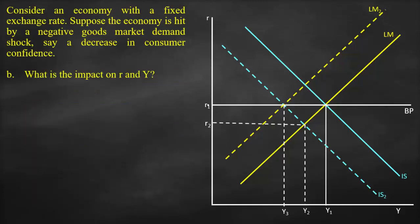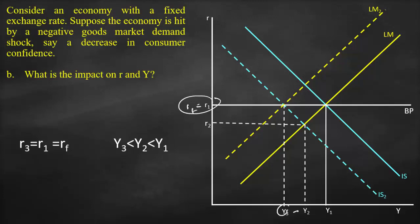For the second part of the question — what is the impact on interest rate and output? — the interest rate returns to its original level: R1 equals RF. However, output has fallen, with Y3 being lower than Y2, which is lower than Y1.